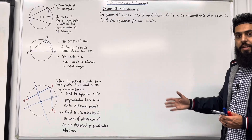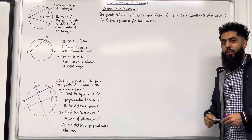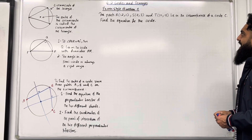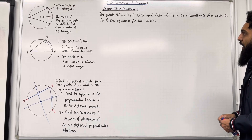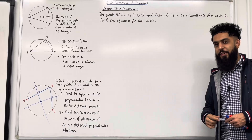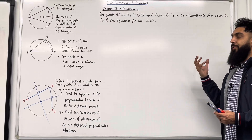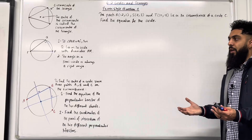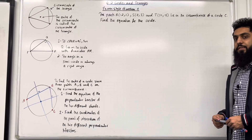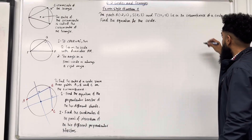We're going to use this knowledge to answer two exam-style questions. Here is exam-style question 1. The points R(−2, 1), S(4, 3) and T(10, −5) lie on the circumference of a circle C. Find the equation of the circle. Now whenever you get questions about circles, it is very useful to set up a diagram. Once you've got your diagram set up, it becomes much easier to find the solution.